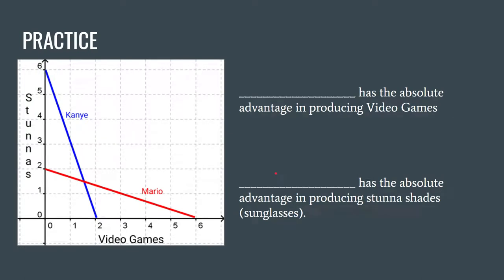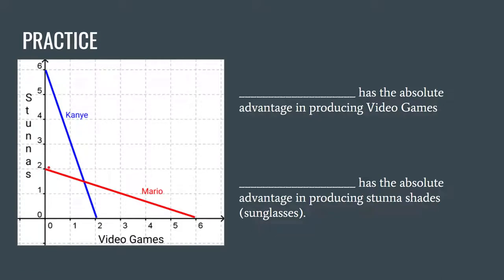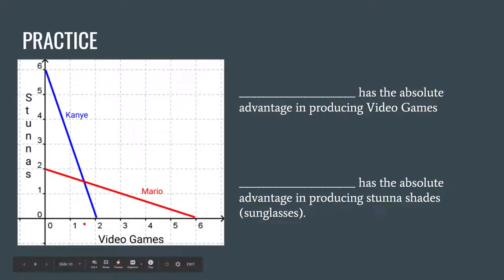Let's do a little practice using this graph. I want you to determine who has the absolute advantage in producing video games and sunglasses. We have two producers: Mario, represented in red, and Kanye, represented in blue. Each curve shows the theoretical maximum they can produce of video games and sunglasses. Go ahead and pause the video and take a guess at who can produce more video games and who can produce more sunglasses.